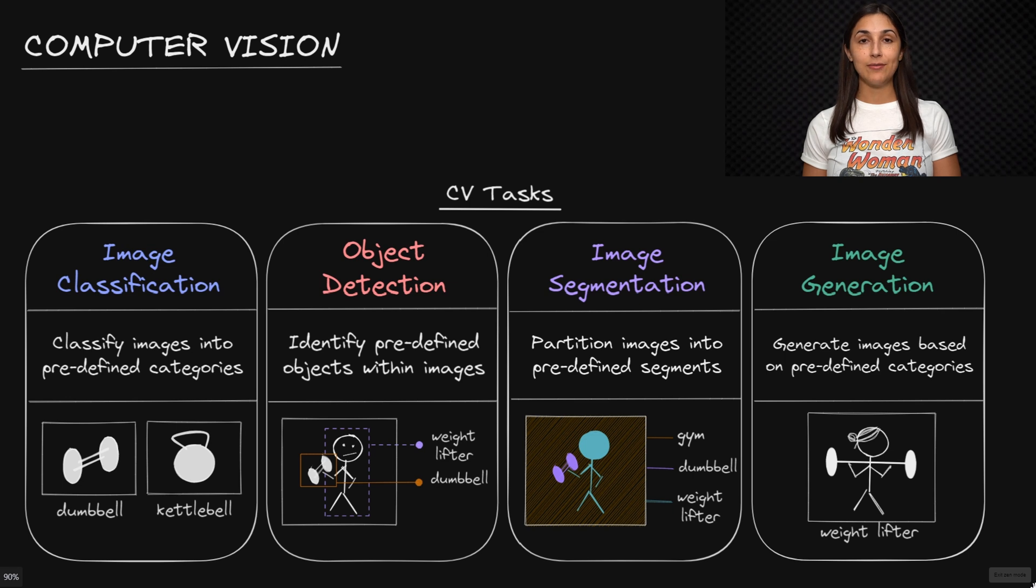Computer vision is involved with enabling machines with the ability to work with and understand visual data, like that of digital images and videos, for example.